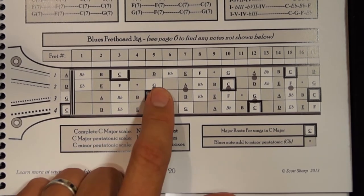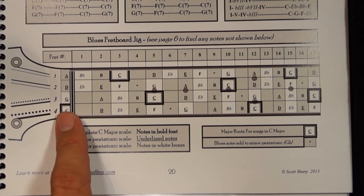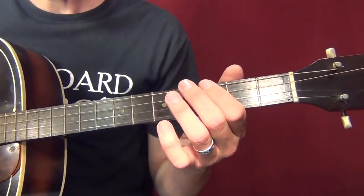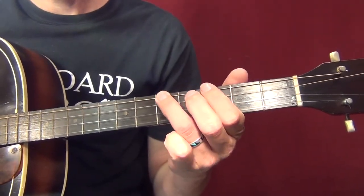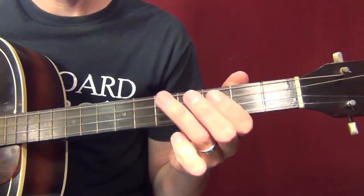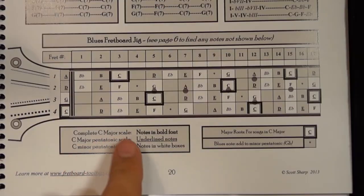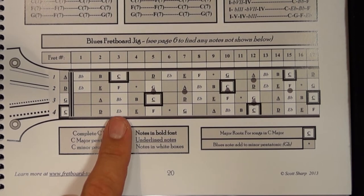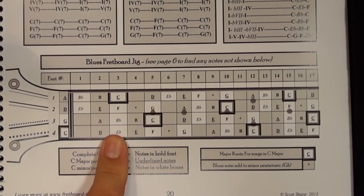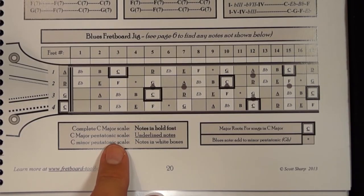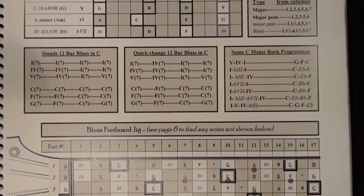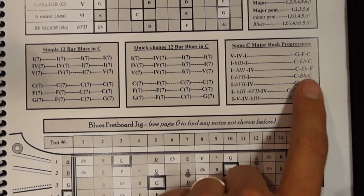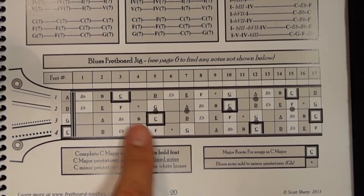Going from C to C using the minor pentatonic scale, I use the notes C, E-flat, F, G, B-flat, C. That has a bluesier sound right off the bat. The cool thing about bluesy music is that you can play a minor pentatonic scale over major chords — C major, F major, G major — or over a bluesy progression, and those white box notes are going to sound real cool.